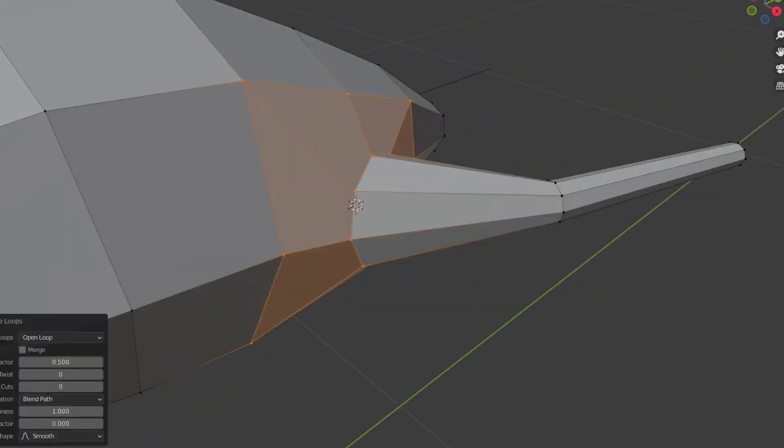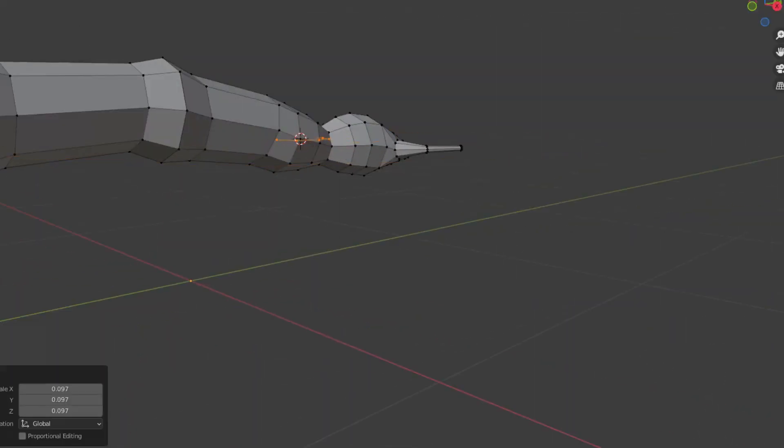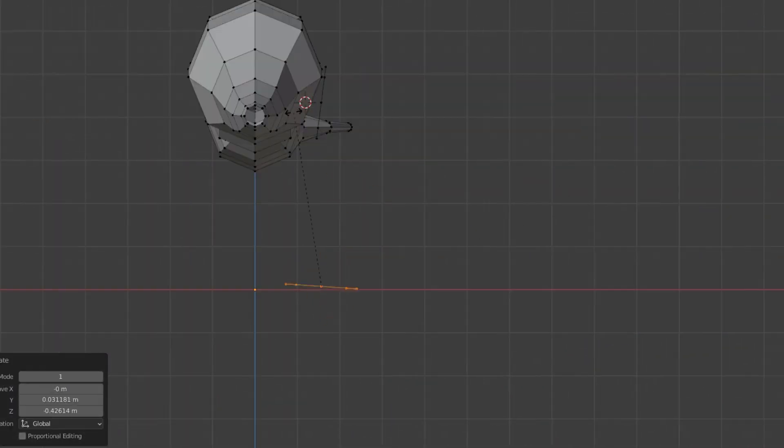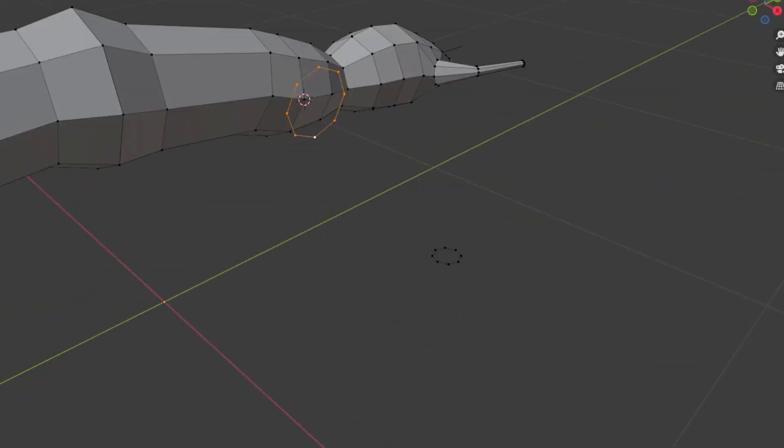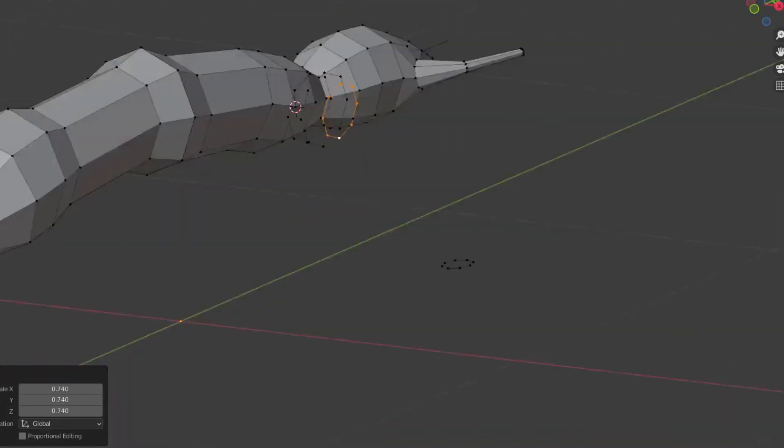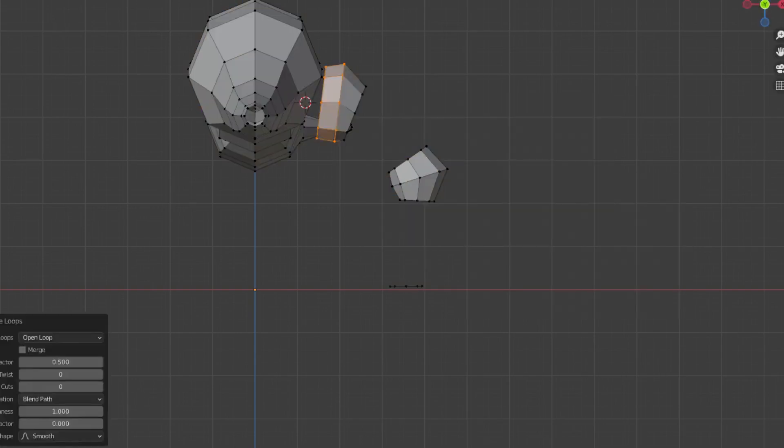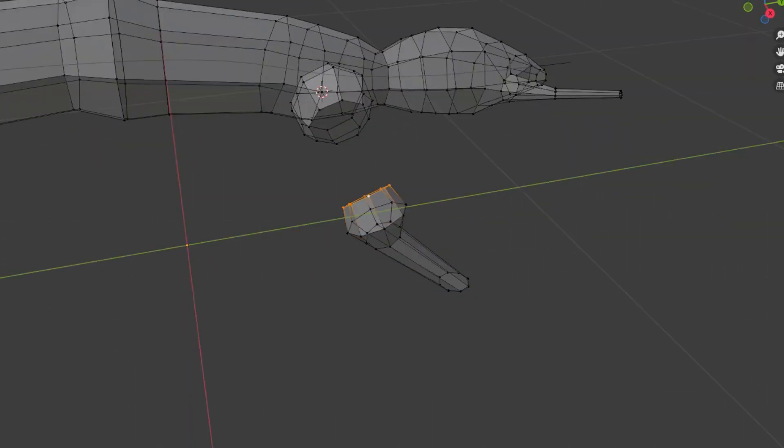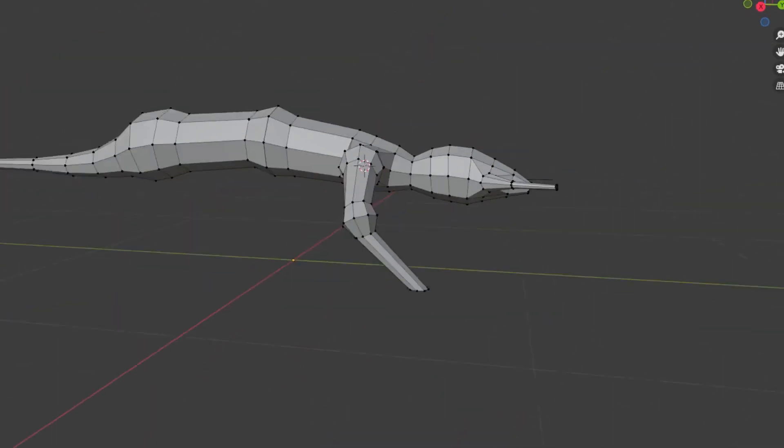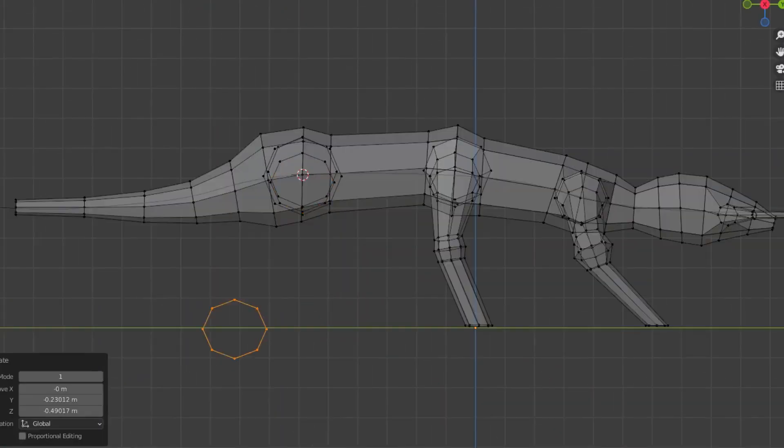I then model an antenna and attach it to the head. The legs are slightly more complex than the antennae. I first decide where I want the foot to be placed, but then instead of connecting the hip directly to the foot, I create segments, which will act as joints later on. The number of joints, as well as their position and shapes, will later be controlled by genes in the creature's DNA. I use the bridge edge loops function to connect the leg to the torso, and then build the other legs in a similar way.